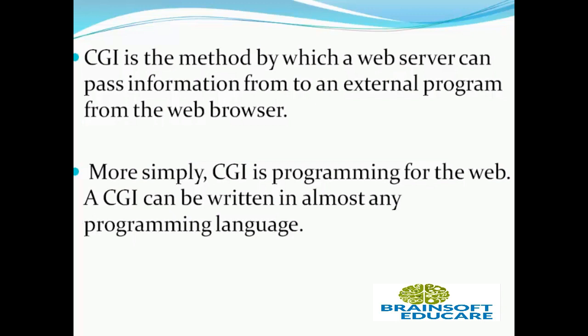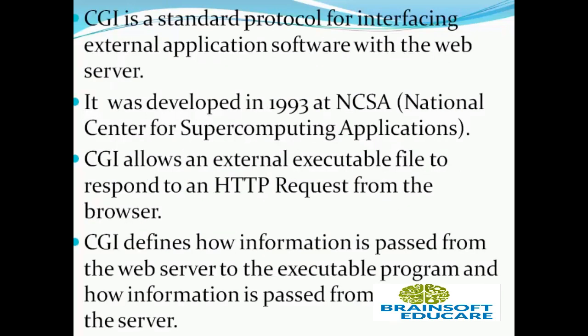CGI defines how information is passed from the web server to the executable program and from the web browser. More simply, CGI is programming for the web. A CGI can be written in almost any programming language. CGI is a standard protocol for interfacing external application software with the web server.